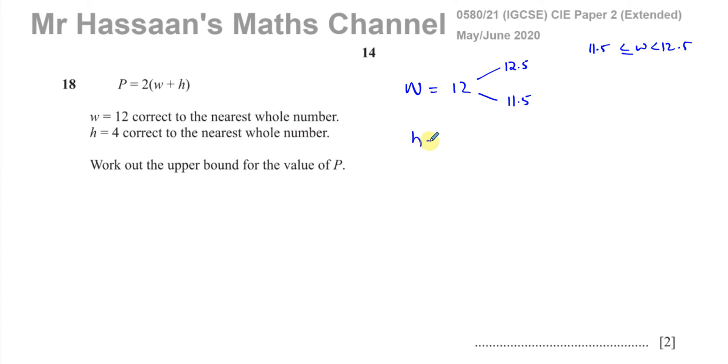Then you have H, which equals 4, correct to the nearest whole number again. So again, it's going to have a lower bound of 3.5 and upper bound of 4.5. Those are the values that could have been between before it was rounded.